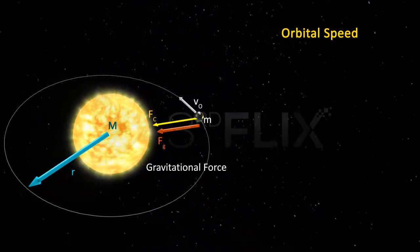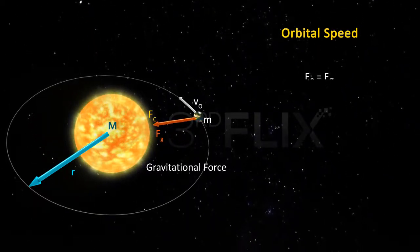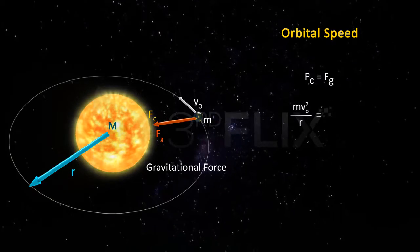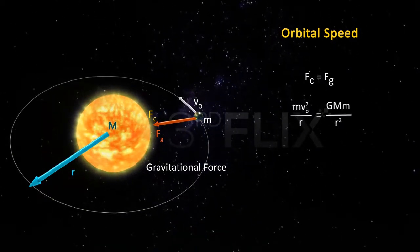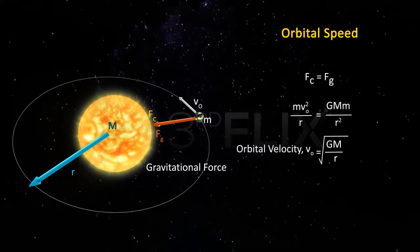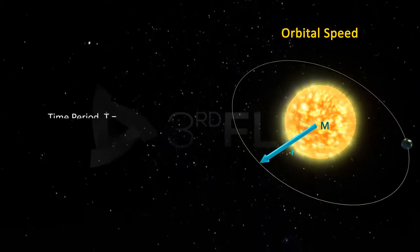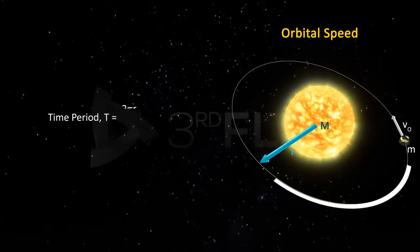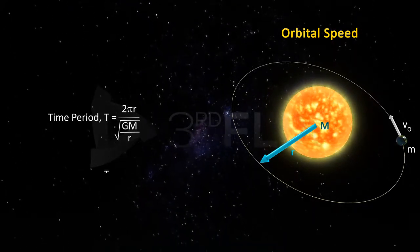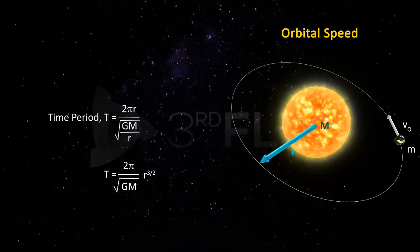The centripetal force necessary for the rotation of the planet is provided by the gravitational pull of the Sun. Therefore, the centripetal force on the planet must equal the gravitational force due to the Sun: mv-naught²/r = G·M·m/r². Thus, orbital speed v-naught = √(GM/r). The time period for one revolution is the circumference divided by orbital speed, giving T = 2π/√(GM) · r^(3/2).